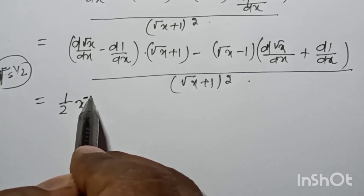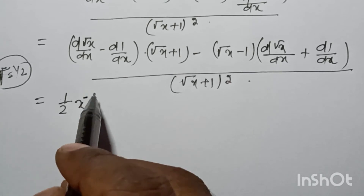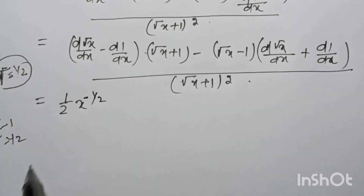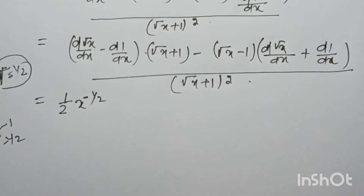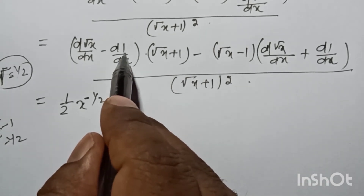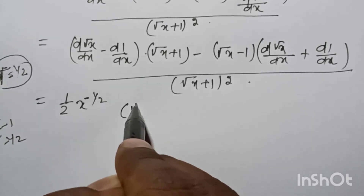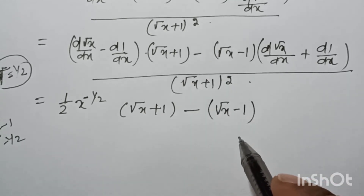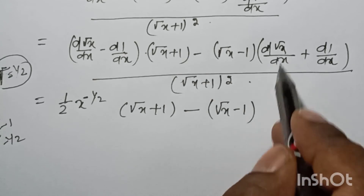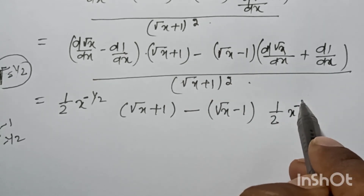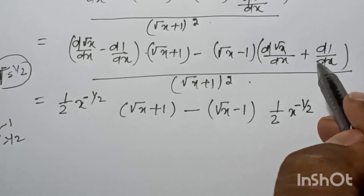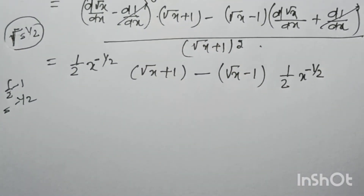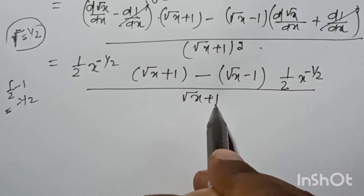That is 1 by 2 minus 1 equals minus 1 by 2, so the derivative is 1 by 2 x to the power minus 1 by 2. The derivative of any constant is 0, so those parts become 0. This gives us 1 by 2 x to the power minus 1 by 2, into root x plus 1, minus root x minus 1 into 1 by 2 x to the power minus 1 by 2, all divided by root x plus 1 square.